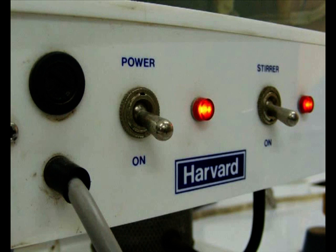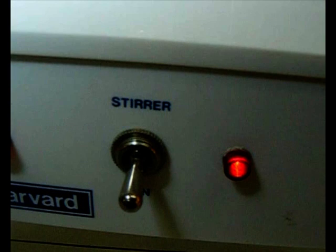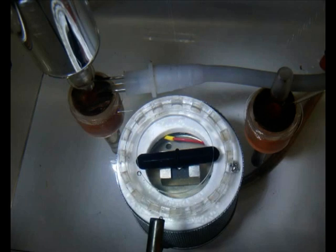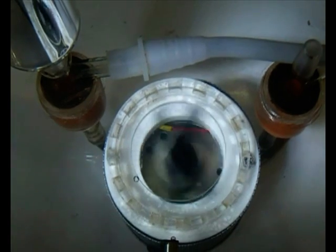The power switch turns the apparatus on. The stirrer switch turns the stirrer in the bath on. The stirrer evenly distributes the temperature in the outer bath.